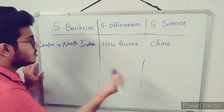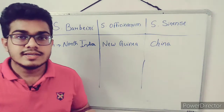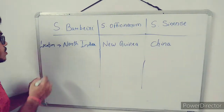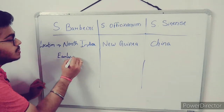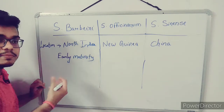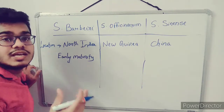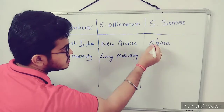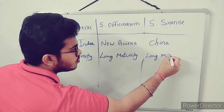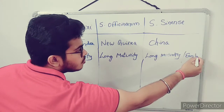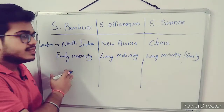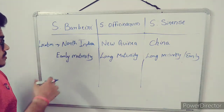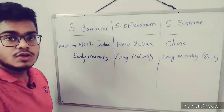Now coming to maturity duration — how long each species takes to grow. Saccharum barbari is an early maturing variety, it takes fewer months to grow. Saccharum officinarum is a long maturity variety. Saccharum sinensis can be long or early maturity depending on the variety. Saccharum barbari, which is most important for Indian conditions, grows very early.